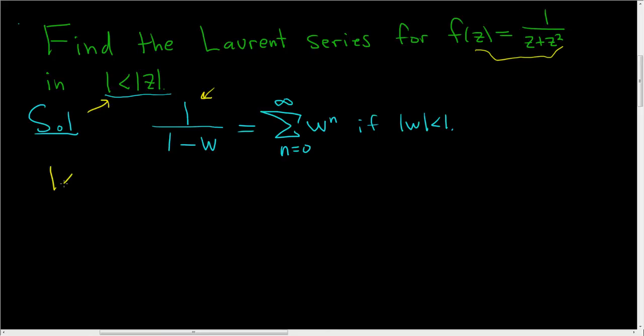We have 1 less than the modulus of z. We somehow want to write this as an inequality that is less than 1, right, because we want to use this formula. Well, to do that, the natural thing to do is to divide by the modulus of z.